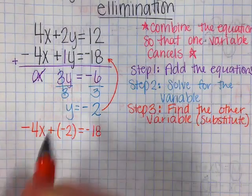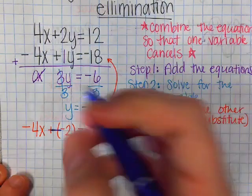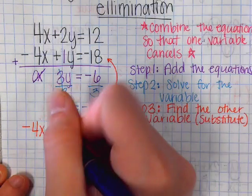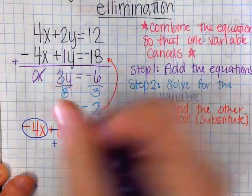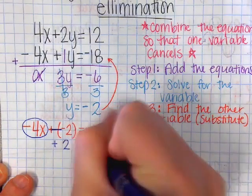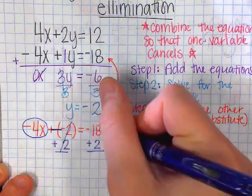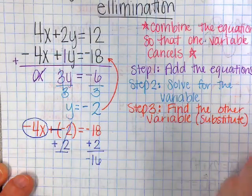So then I have negative 4x plus a negative 2, which is the same thing as just subtraction. So then the opposite of subtract is add, because I'm trying to find my x value. So I'm going to add 2 and add 2. Negative 18 plus 2 would be negative 16.